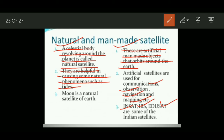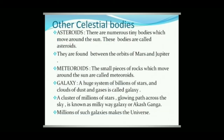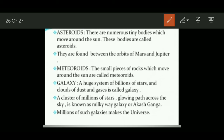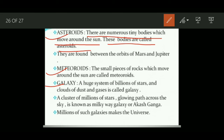Other celestial bodies of great importance include asteroids and meteoroids. Asteroids are numerous tiny bodies which move around the Sun and are found between the orbit of Mars and Jupiter. Meteoroids are small pieces of rocks which move around the Sun.